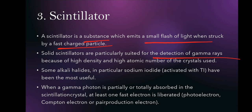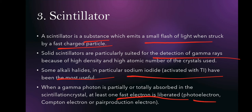Some alkali halides, in particular sodium iodide, have been the most useful. Sodium iodide activated by Tl is usually used as a scintillator. When a gamma photon is partially or totally absorbed in the scintillation crystal, at least one fast electron is liberated. This electron can be a photoelectron, a Compton electron, or a pair production electron.